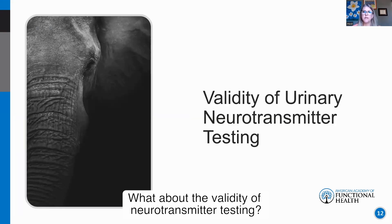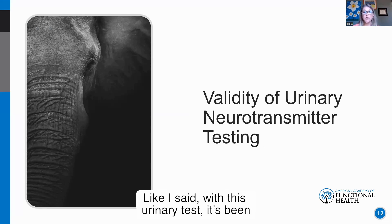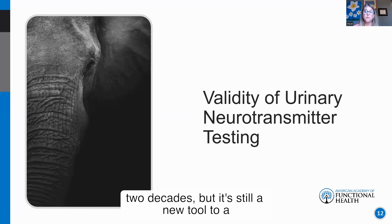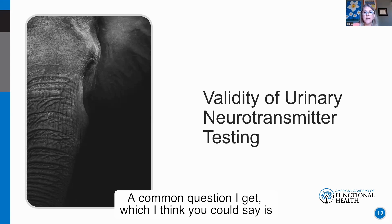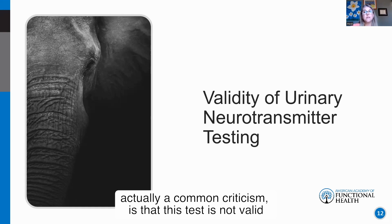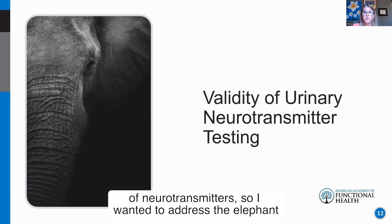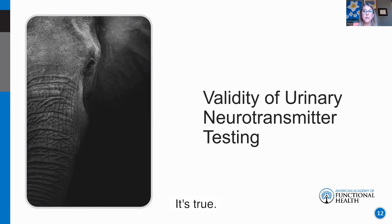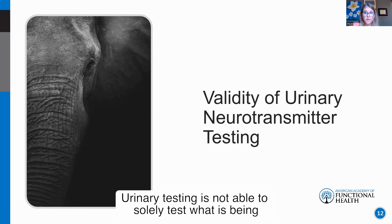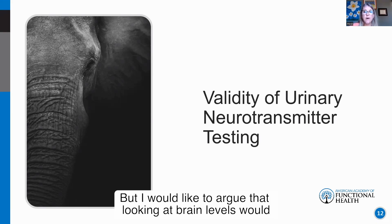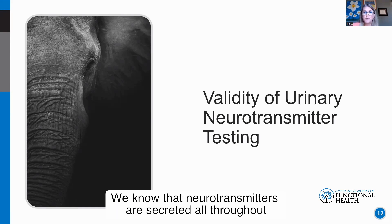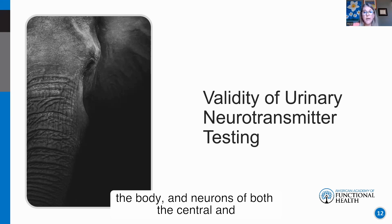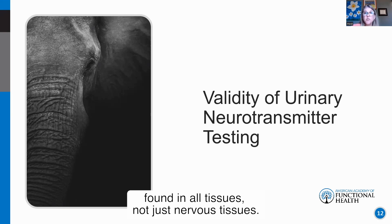Regarding the validity of neurotransmitter testing: this urinary test has been commercially available in the U.S. for over two decades, but it's still new to many practitioners. A common criticism is that it's not valid because it doesn't solely reflect brain levels of neurotransmitters. It's true — urinary testing cannot solely test what is being secreted in the brain. But looking only at brain levels would actually limit the clinical approach, since we now know the mind-body separation is old thinking. Neurotransmitters are secreted all throughout the body, and receptors are found in all tissues, not just nervous tissue.